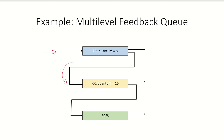We are assuming that no process in a lower priority queue can run while there is a process in a high priority queue. Only when the high priority queue processes are complete will the scheduler schedule a process in the low priority queue. There are three queues: Q1 follows round robin scheduling with a time quantum of 8, Q2 follows round robin with a time quantum of 16 time units, and Q3 follows the first come first serve scheduling algorithm.